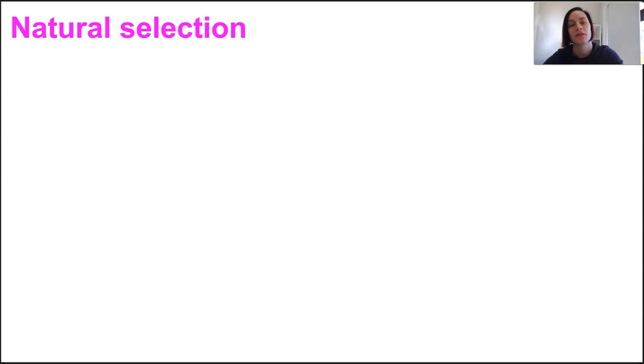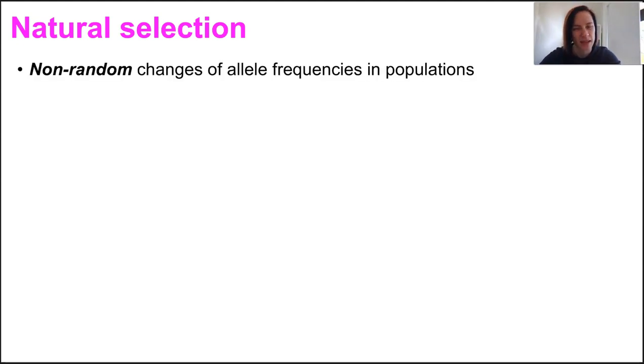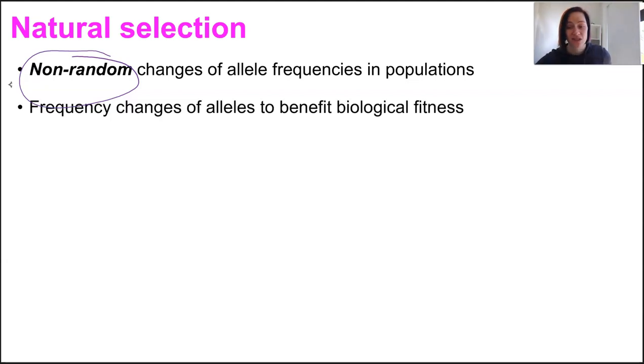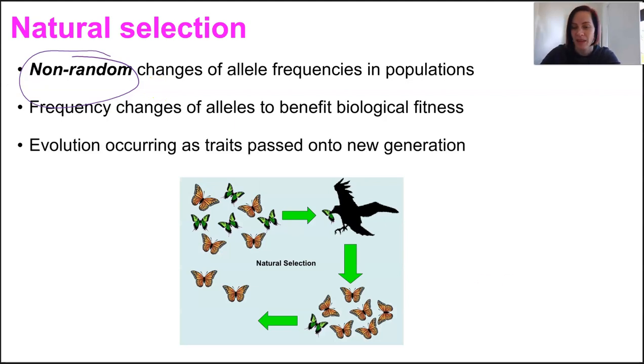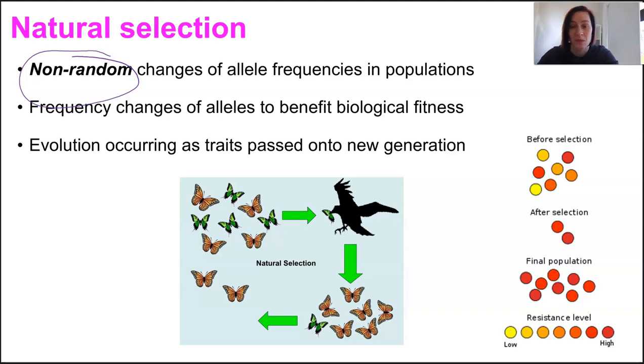Now, natural selection contributes to the frequencies of alleles in a population in a similar way to genetic drift, but the difference being that these changes are not random. That's why I'm bringing your attention to this part there. Where genetic drift can have alleles that are beneficial, detrimental, or completely neutral, just floating in and out with migration, the frequency of these ones in natural selection only changes to better the biological fitness of a population to help them reproduce and help them survive. So remember that an individual doesn't undergo any phenotype changes in its lifetime. It's all about those traits being passed on to the new generation. So therefore, the frequency of alleles will change, but it's changing for the better.